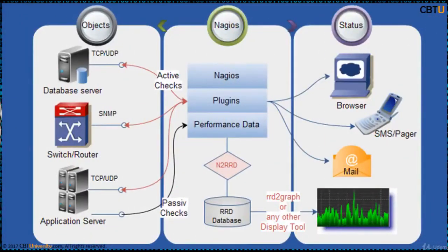This is the operating principle of Nagios. Nagios conducts active checks and passive checks on the nodes and objects. It interacts with the RRD database for reporting, and it sends alerts and events to the browser, email, SMS, pager, etc.